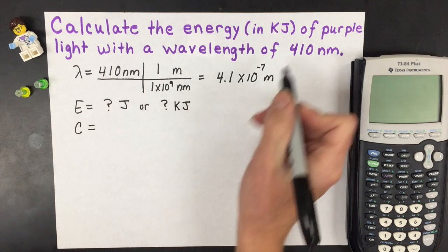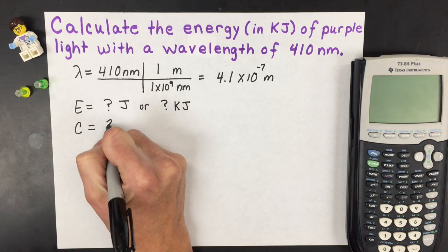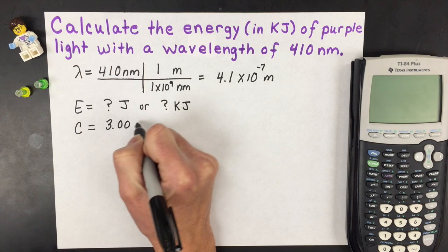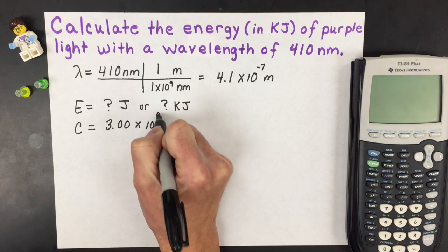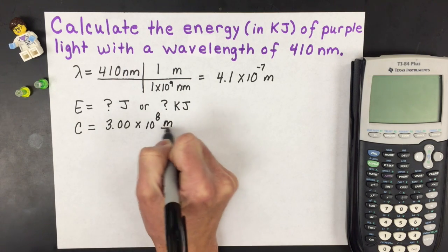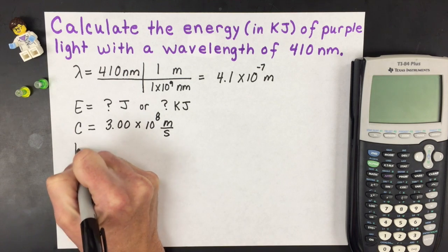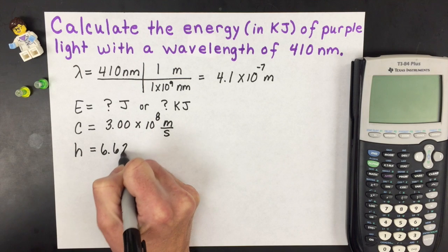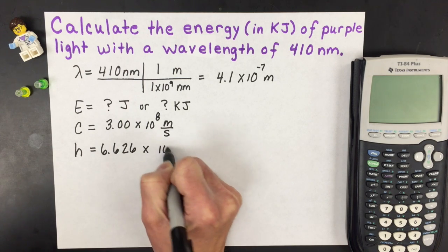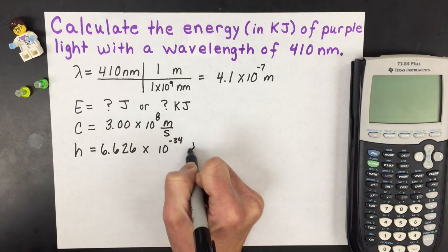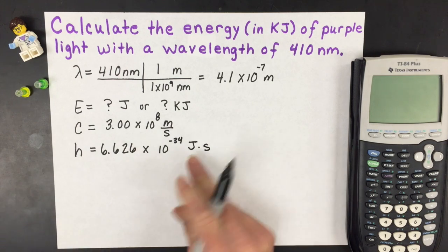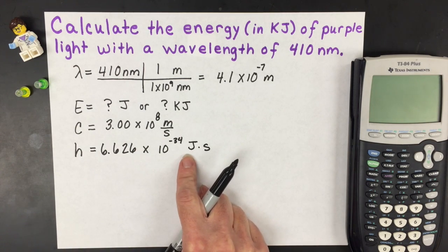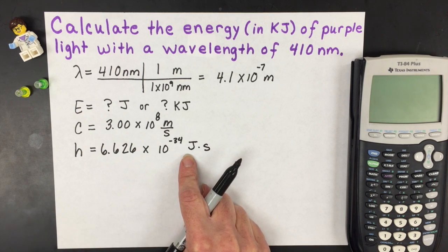The next thing we're going to do is realize that since we're talking about visible light, it's going to travel at the speed of light, and all electromagnetic radiation travels at 3 times 10 to the 8th meters per second. We also have Planck's constant, which is 6.626 times 10 to the negative 34th joules times seconds. That's where we're going to get our energy unit from, but we'll have to convert that into kilojoules at the end.